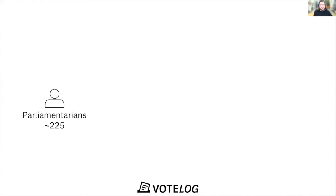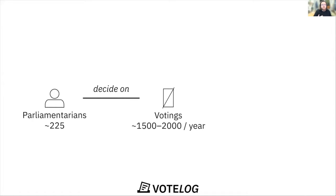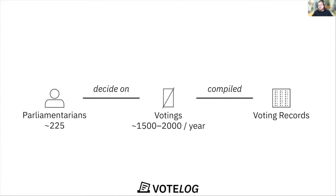The parliamentarians in a legislative period have a lot of decisions to make on these votings, which is an enormous amount of voting, as you can see, every year and even more over a legislative period. But luckily, all of this gets compiled in these voting records that a lot of you already know. And we can use this to analyze also the voting behavior.